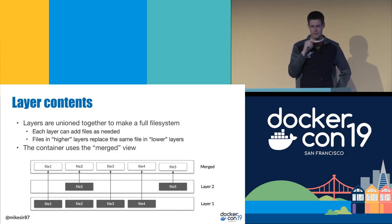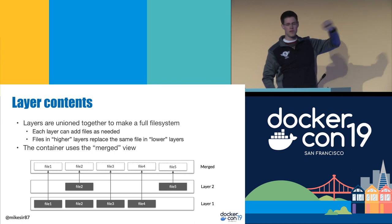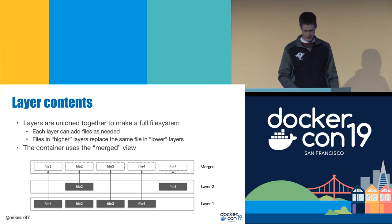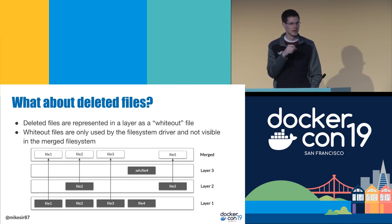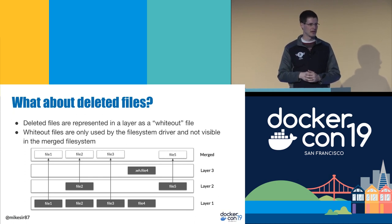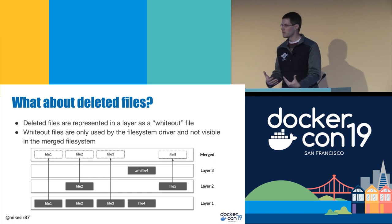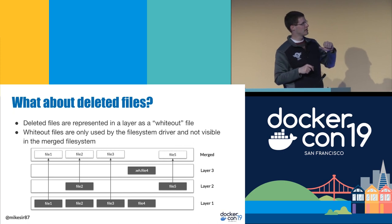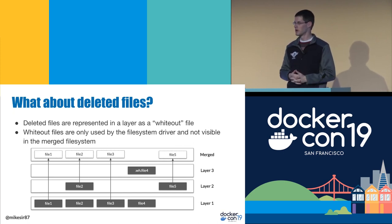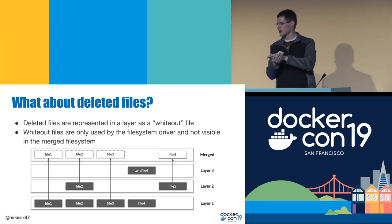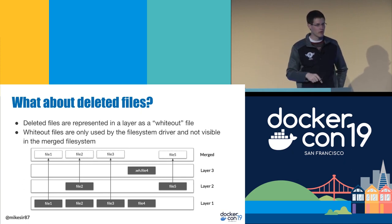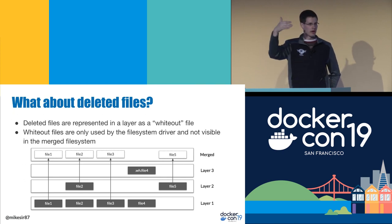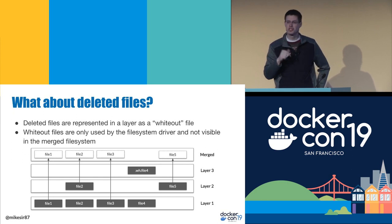How do deleted files get represented in the layer structure? If a command in my Dockerfile says remove this file, it uses what's called a whiteout file. If I write something with a pen and realize I didn't mean to write it, I get out some whiteout and cover it up — same idea here. In layer three, if I'm removing a file, that layer's tar file has a zero-length file named .wh.file4. When the union file system puts these all together, the final container doesn't see that file four existed. But file four is still in layer one — once a layer is created, it can't be modified. I'm still shipping file four even though I'm not using it.